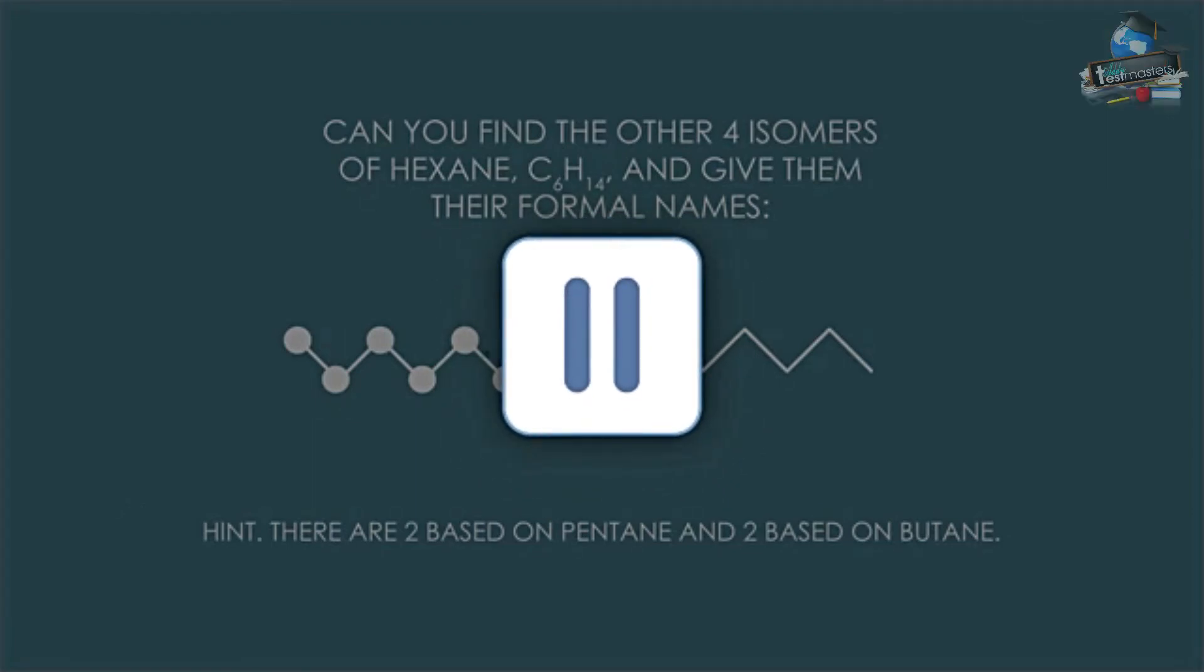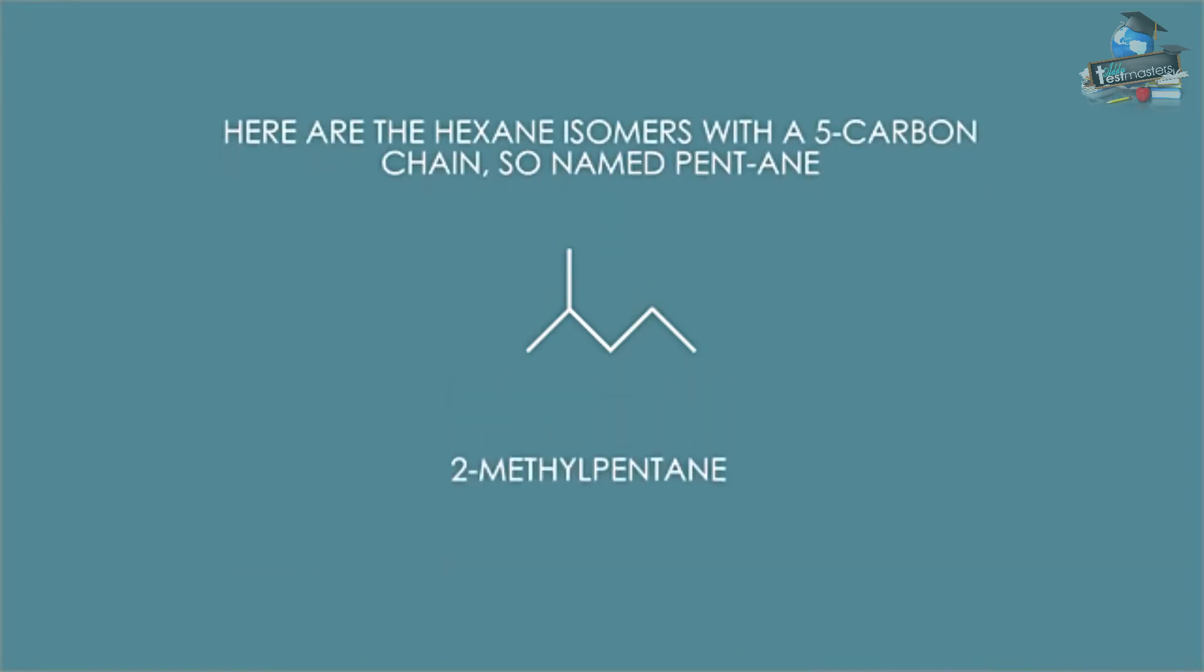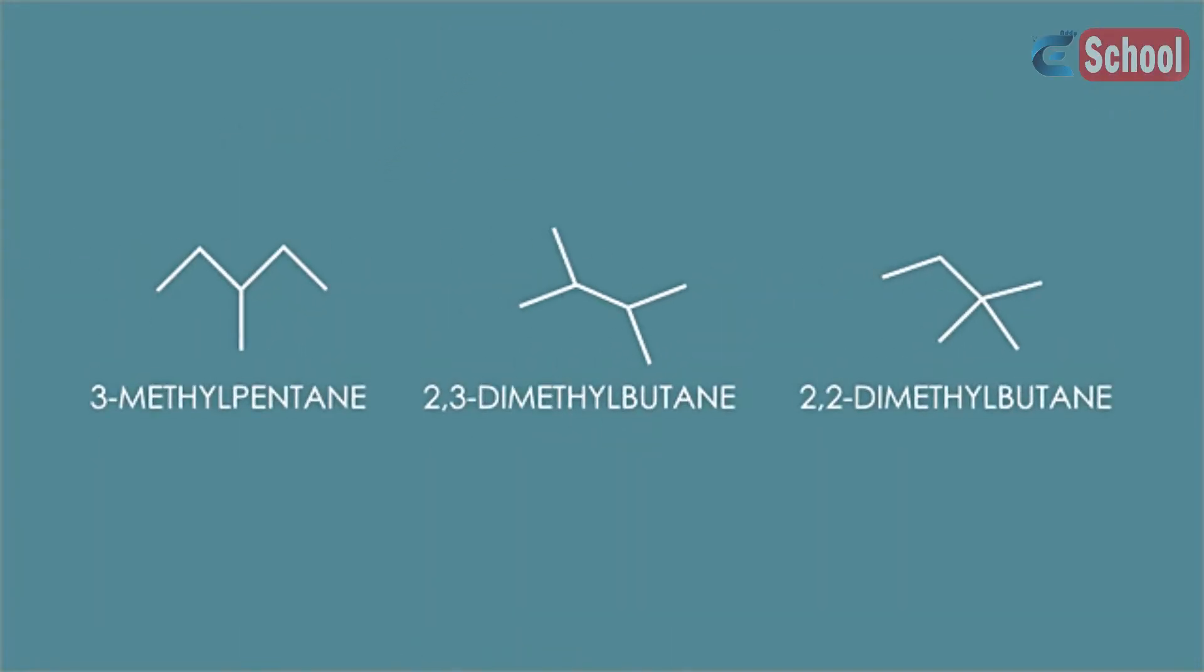Here are the hexane isomers with five carbon chain, so they are named pentane: 2-methyl pentane—two because the methyl group is on the second carbon atom in the pentane chain. With six carbons and 14 hydrogens, it's still hexane. And here's the other isomer based on pentane: 3-methyl pentane.